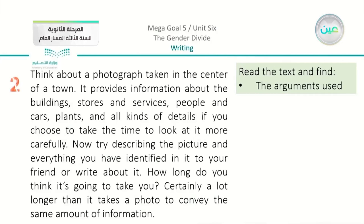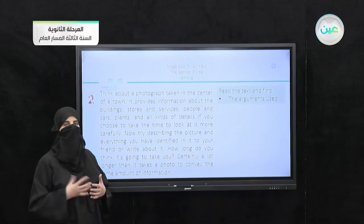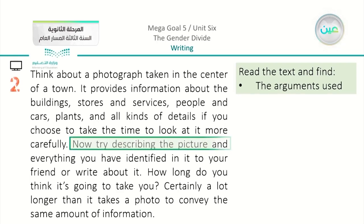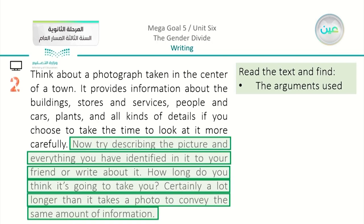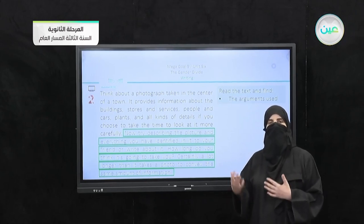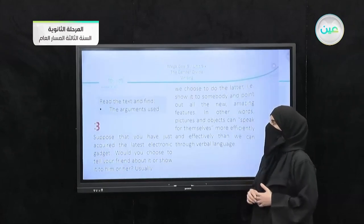Now we have the second part: read the text and find the arguments. We start with the other five paragraphs looking for the arguments. When you have an argument, you are trying to prove an idea. Scanning the second paragraph, the argument is: 'Try describing the picture and everything you have identified in it to your friend or write about it. How long do you think it's going to take you? Certainly a lot longer than it takes a photo to convey the same amount of information.' The writer is asking you to try something as a way to prove his point of view.